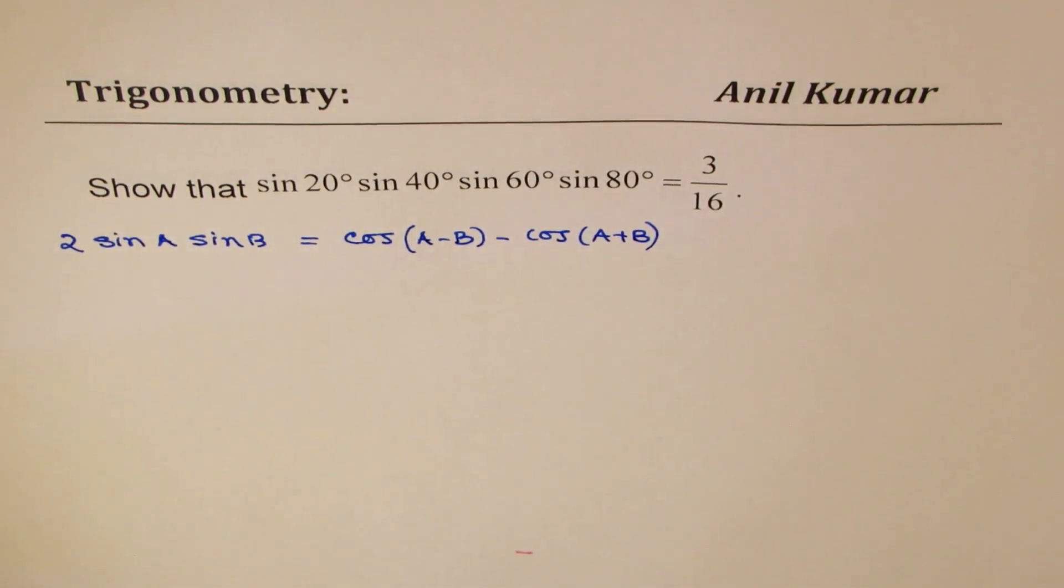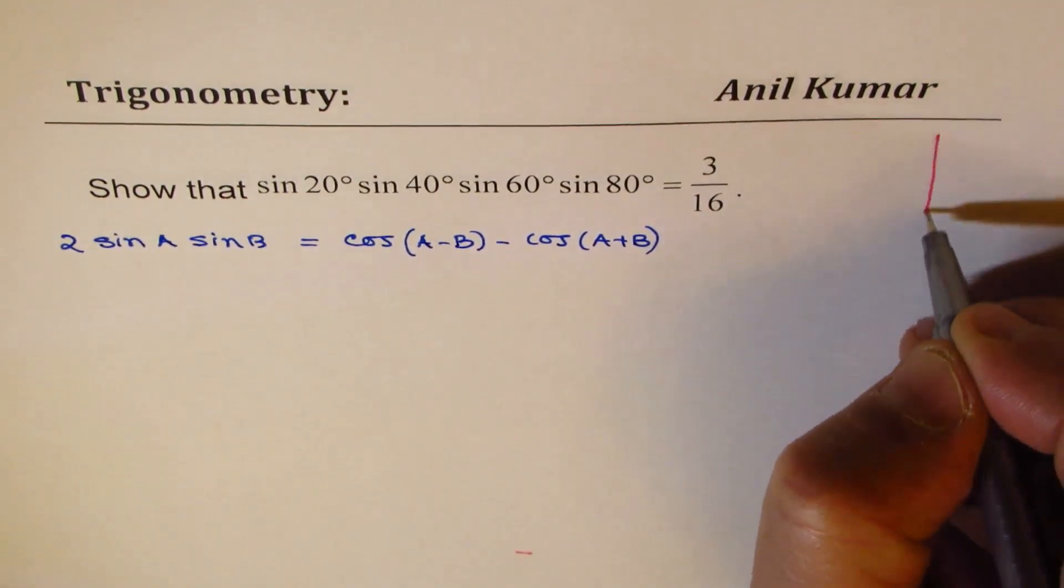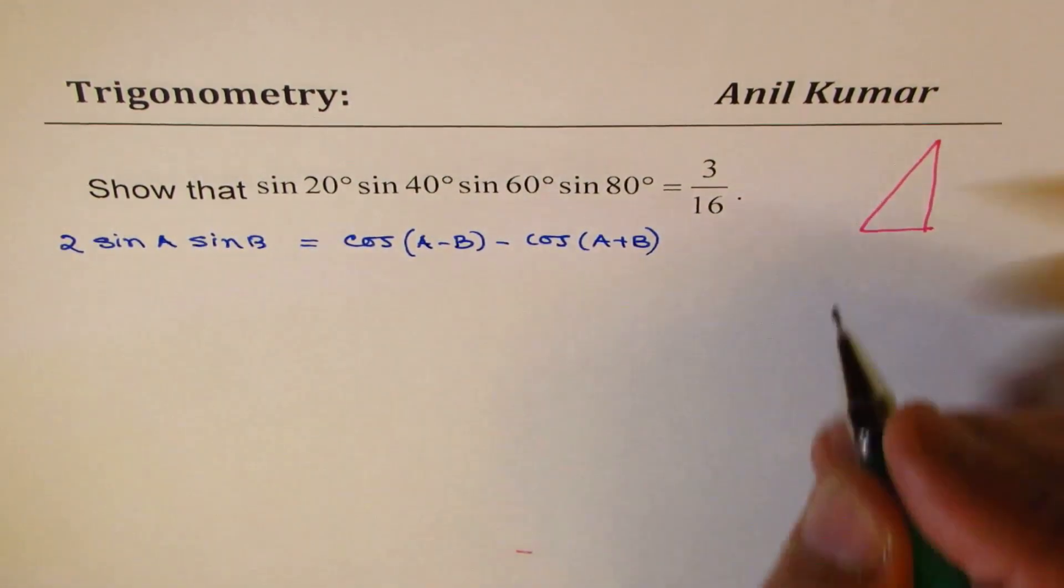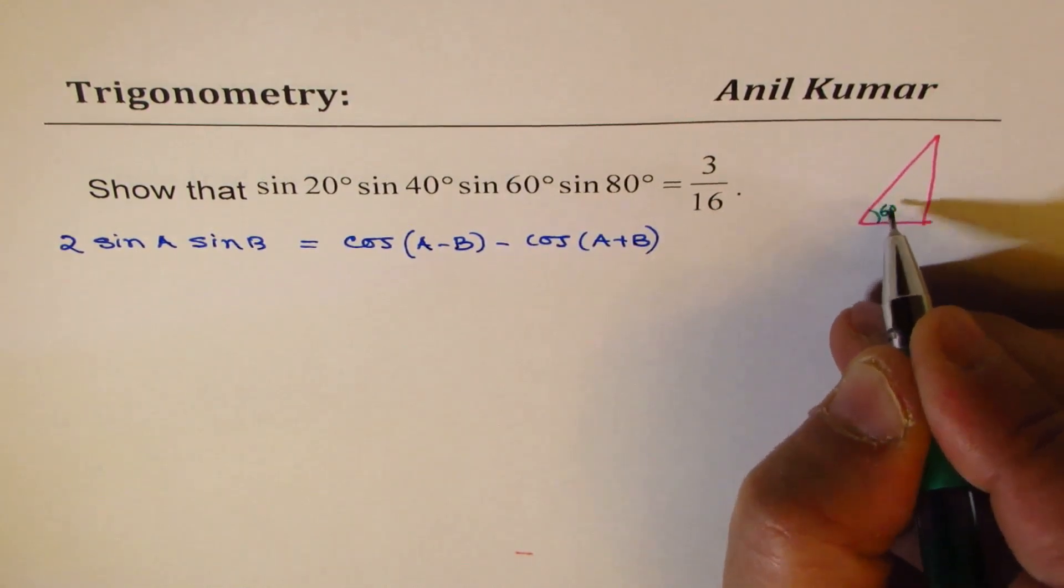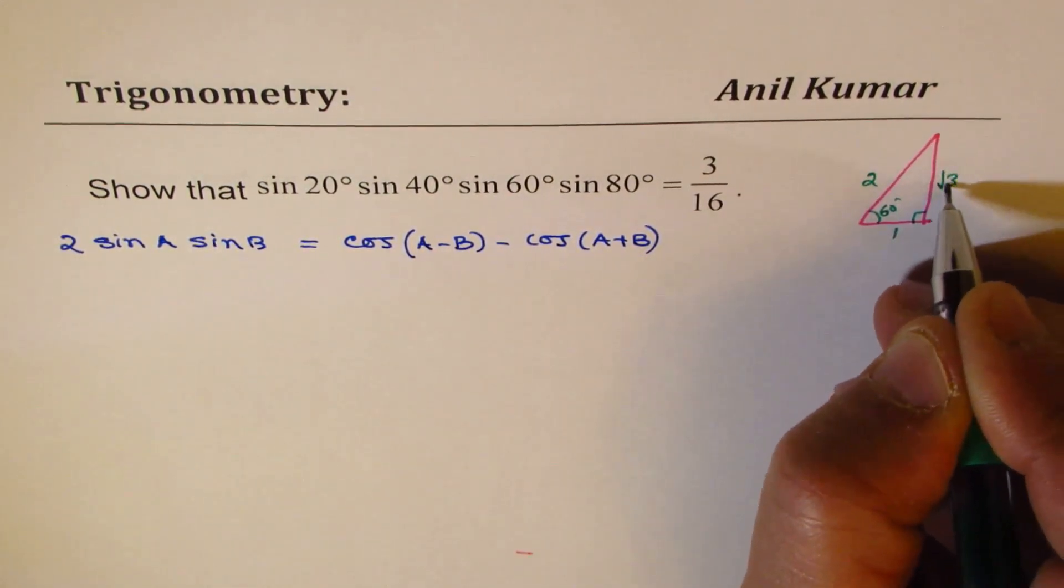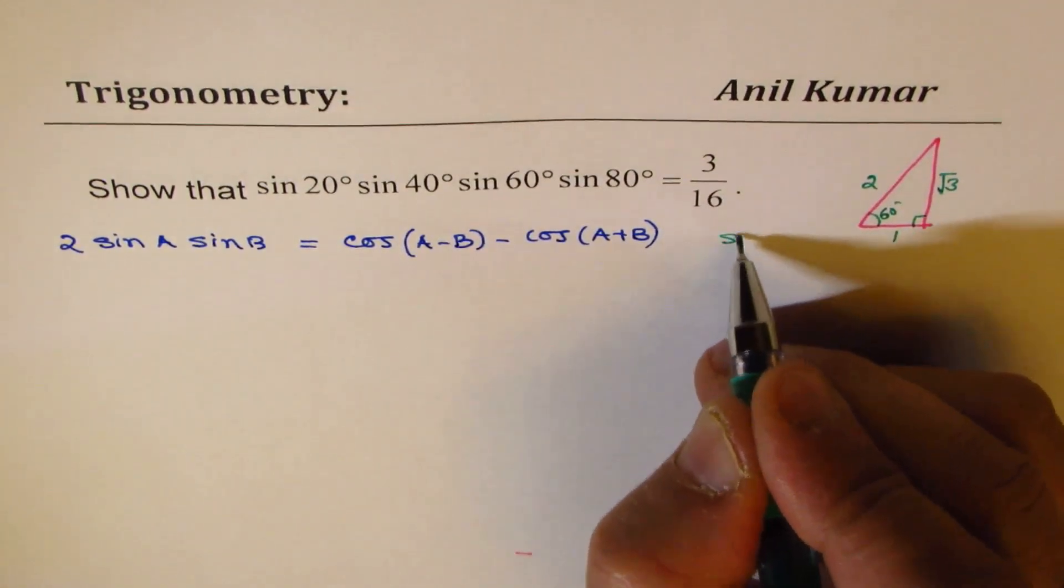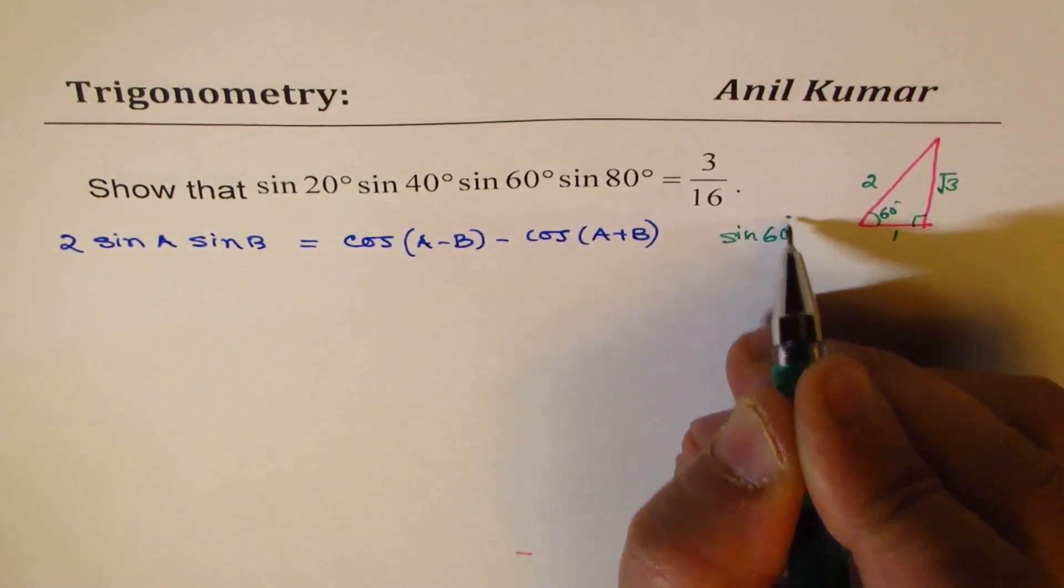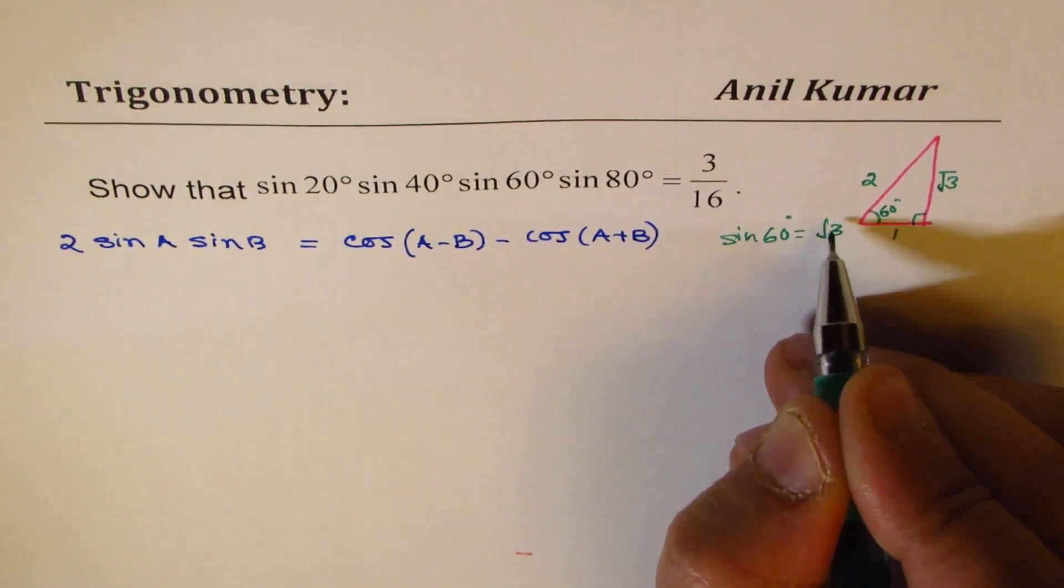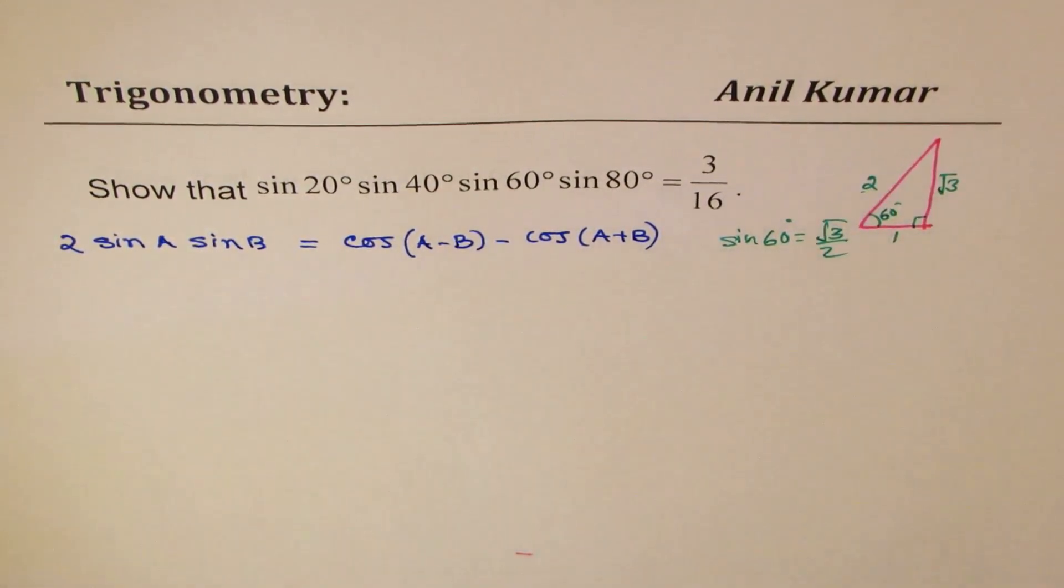Another thing which we are going to use is the fact about this special triangle, cos 60°. So if this is 60°, that is 90°. The sides are 1, 2, and √3. And that gives me the value of sin 60° as equal to opposite side √3 divided by hypotenuse 2. So let's begin from here.